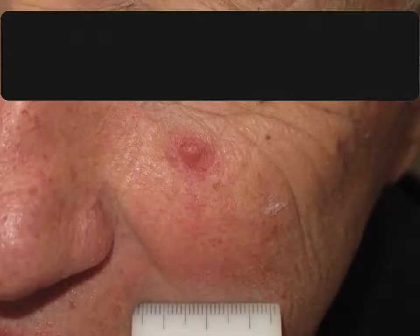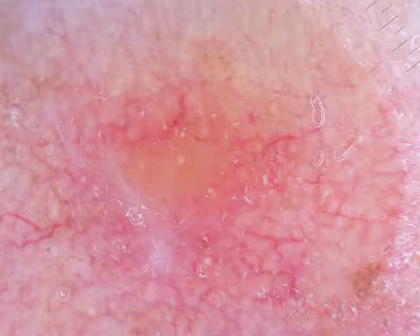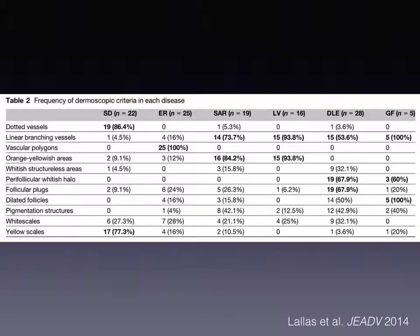This is another example of sarcoidosis manifesting as a solitary papule on the face, dermoscopically displaying yellow patches and linear vessels. As shown in this table, this dermoscopic pattern is very common in granulomatous dermatoses and very uncommon in other entities, so it is particularly useful for their recognition.